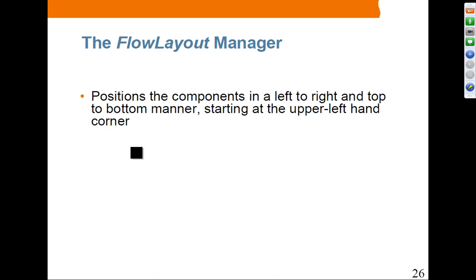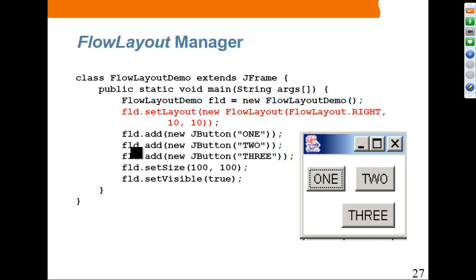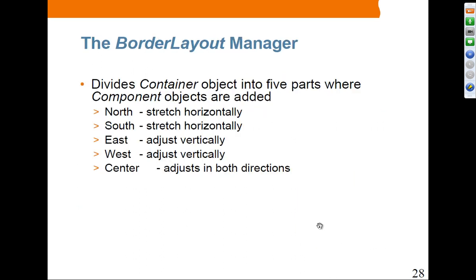FlowLayout positions components from left to right and top to bottom, starting from the upper left corner. Here is a very simple application — the FlowLayout demo project. This is a JFrame, an extension of JFrame. I call the setLayout method of the JFrame class, and provide the FlowLayout object — in this case right-aligned with 10 by 10 spacing. If you have three buttons, they will start here and go across, then continue on the next row.